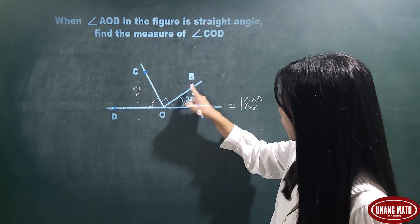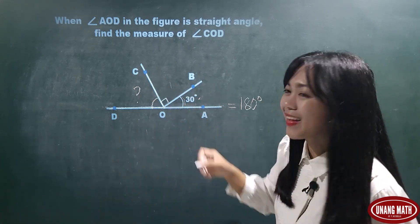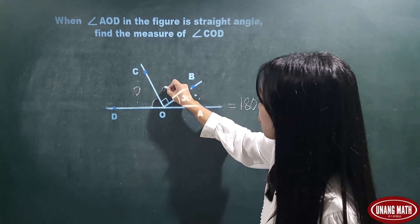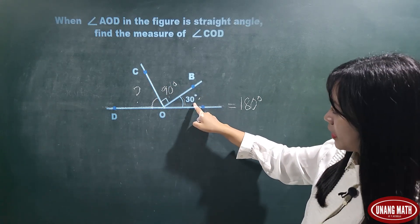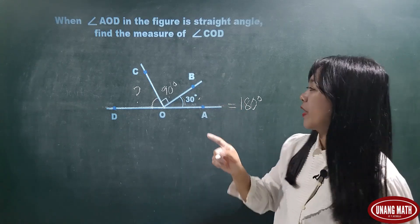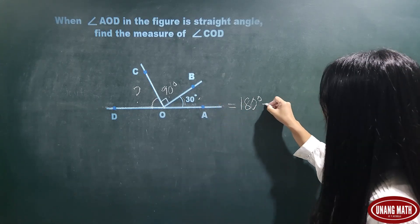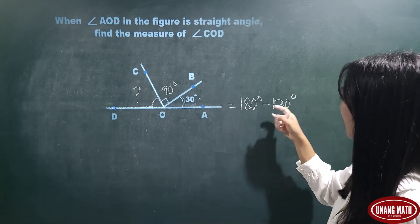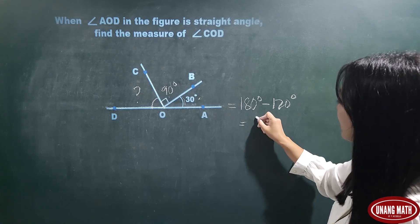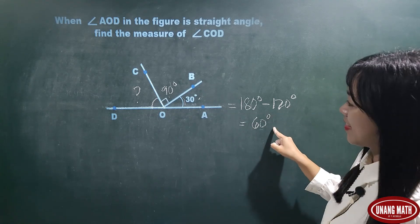And angle COB is a right angle. So, right angle measures 90 degrees. So, 90 plus 30, that is equal to 120 degrees. So, 120 degrees must be subtracted from 180 degrees. So, 180 minus 120, this is equal to 60 degrees.